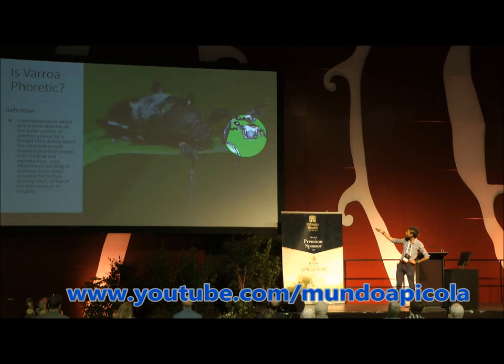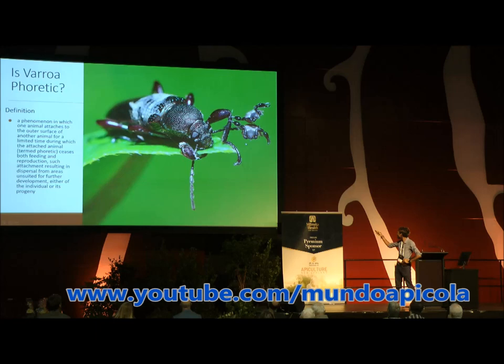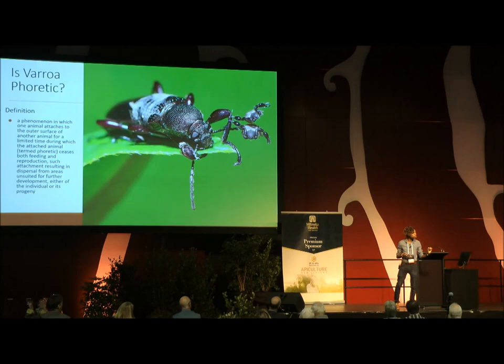This is a great example of a phoretic organism — a pseudoscorpion. It's attached itself to a beetle because this beetle has wings and the pseudoscorpion does not. But look very closely at how it's chosen to attach itself. These are the mouth parts of the pseudoscorpion right here, and they are nowhere near this beetle. It's attached itself by one of its claws and it is not going to feed on that beetle.